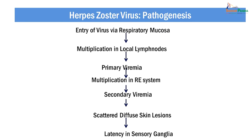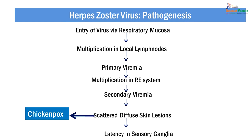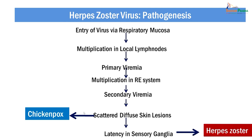The route of entry for varicella zoster virus is via the respiratory tract. The virus multiplies at the local site of entry and invades local lymph nodes. After invasion of local lymph nodes, primary viremia occurs and the virus gets seeded in organs of the reticuloendothelial system. Here the virus multiplies and is again poured into the blood to produce secondary viremia. From secondary viremia, the virus gets seeded in the skin cells and produces scattered diffuse lesions in the form of chickenpox or varicella. The virus then remains dormant or undergoes latency in sensory ganglia. Whenever there is provocation, the virus gets activated, migrates centrifugally, and produces lesions in the form of herpes zoster.